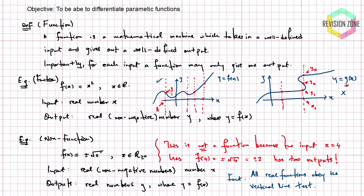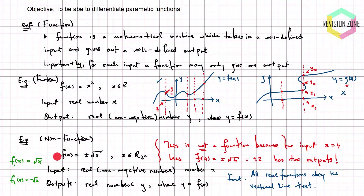There are standard techniques for converting things that are like functions but technically not functions into proper functions. For our non-function example with the square root, we can split it: let f₁(x) = √x (the positive root) and f₂(x) = −√x. Each of these is completely well-defined and gives only one output. We started with something giving multiple outputs, and a small change lets us describe it in a mathematically rigorous way that satisfies the definition of a function.